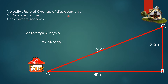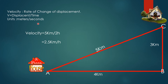Displacement is a vector quantity, so velocity is also a vector quantity. The shortest distance between A and C is the displacement, and displacement in unit time is known as velocity. The units of velocity are meters per second.